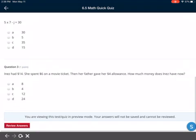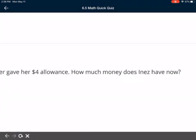Well, for this one, I need to think. What money? I can just think, what parts do I want to use first? Am I going to use the Inez had $14? Do I want to use the she spent $6 on a movie ticket? Do I want to use then her father gave her $4 allowance? You need to think, okay, what do I do first? After you do the first part, then you do the second step so you can answer how much does she have now.